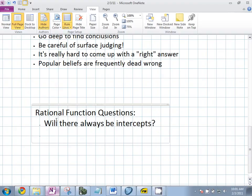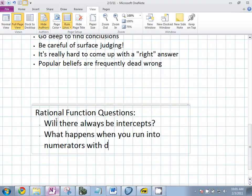Will there always be intercepts? Good question. Next question. What if the numerator is a polynomial function with degree with 3 or 5? What happens when you run into a numerator with degree 3 or higher? I'm not answering these questions yet. I'm just collecting the questions. I like that. Another question.